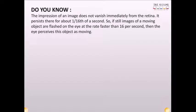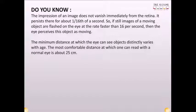Do you know? The impression of an image does not vanish immediately from the retina. It persists there for about 1/16th of a second. So, if still images of a moving object are flashed on the eye at a rate faster than 16 per second, then the eye perceives this object as moving. The minimum distance at which the eye can see objects distinctly varies with age. The most comfortable distance at which one can read with a normal eye is about 25 cm.